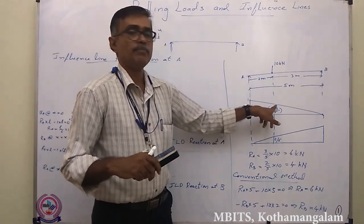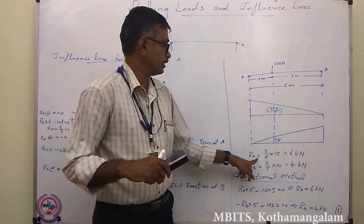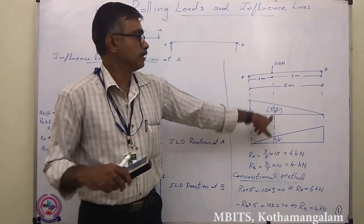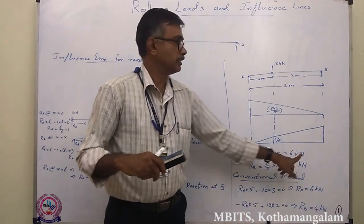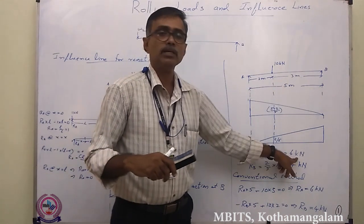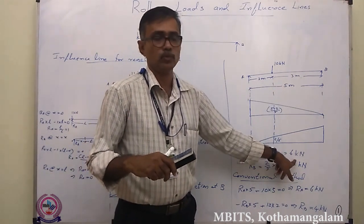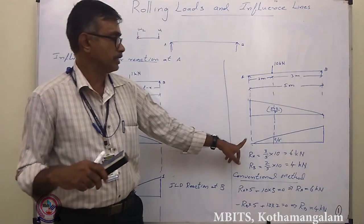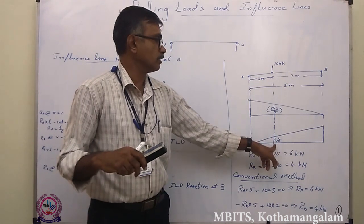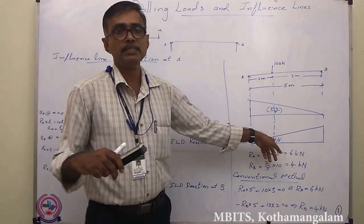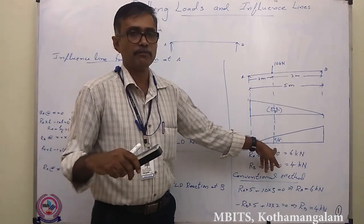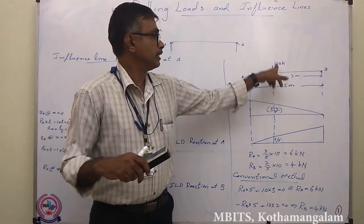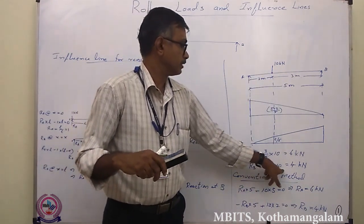The ordinate under the load for reaction at A is (L − X)/L = (5 − 2)/5 = 3/5. Multiplying this ordinate by the load gives the reaction: RA = (3/5) × 10 = 6 kN. For reaction at B, the ordinate under the load is X/L = 2/5. Multiplying by the load: RB = (2/5) × 10 = 4 kN.